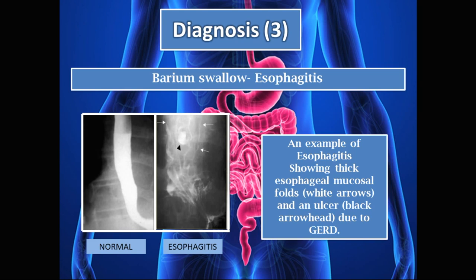Another example barium swallow shows esophagitis. On the left is a normal esophagus, and on the right you can see the inflamed esophagus with thick mucosa indicated by the white arrows, and an ulcer shown as a darkened area indicated by the black arrowhead — also due to GERD.